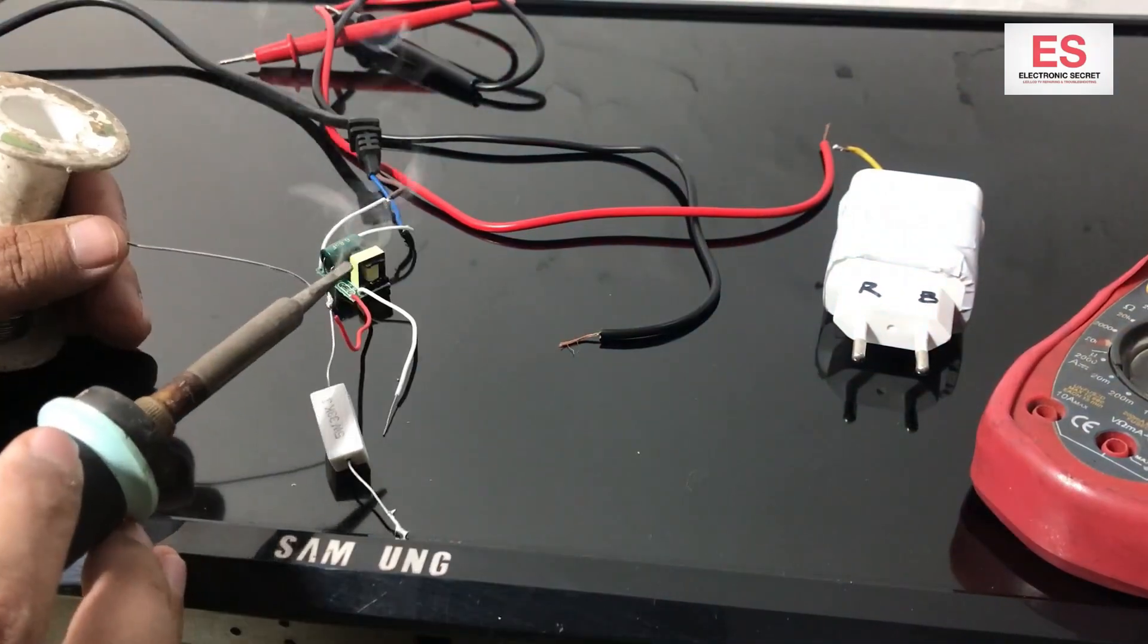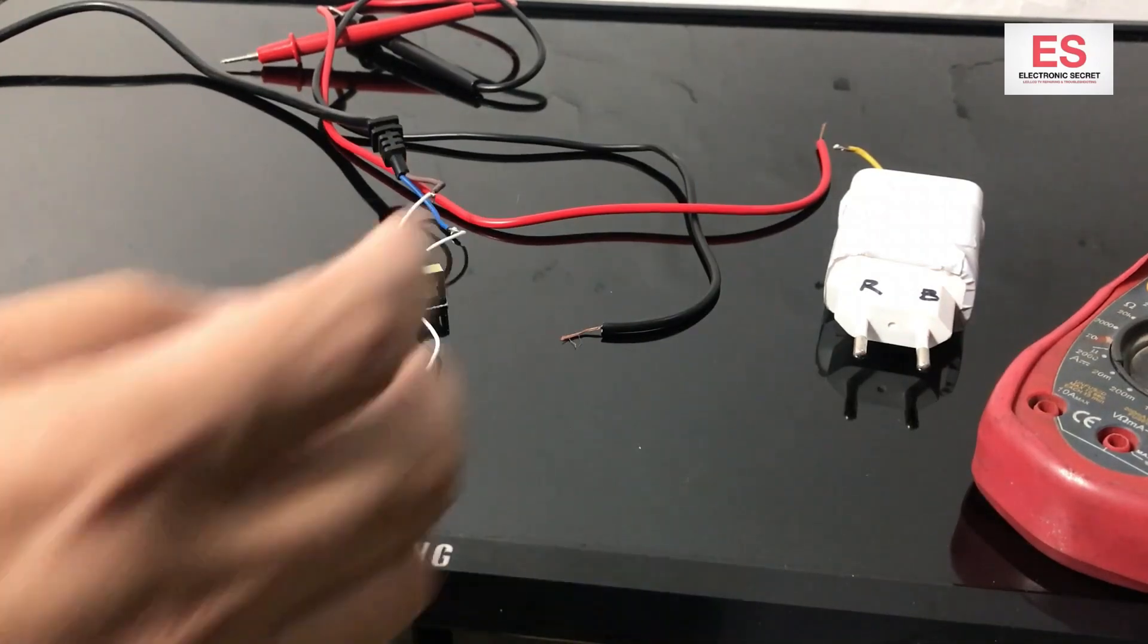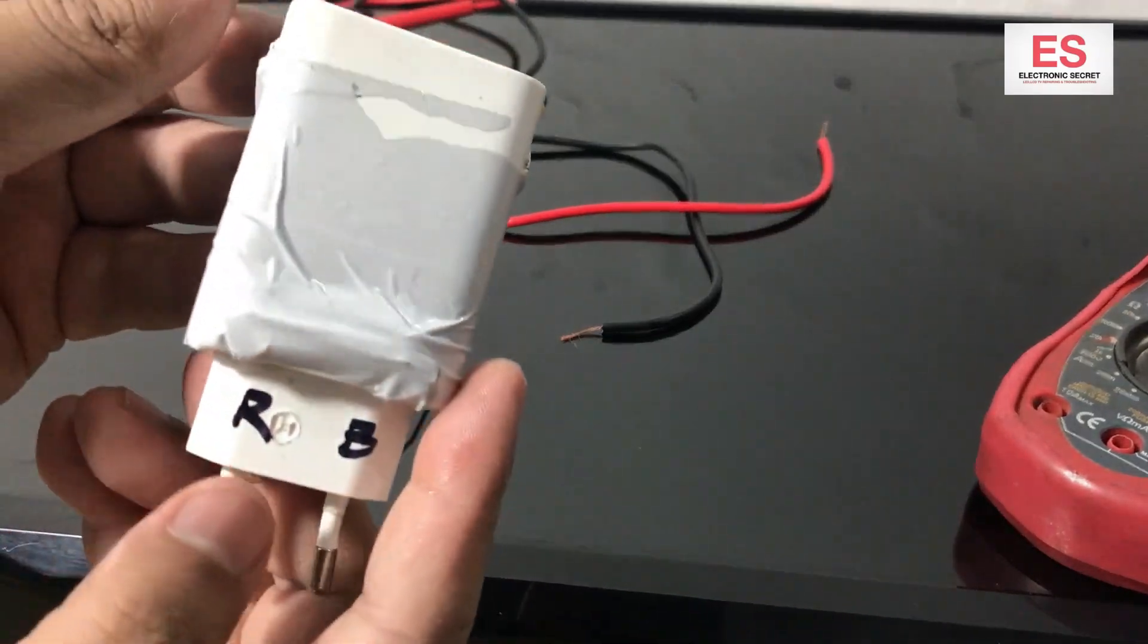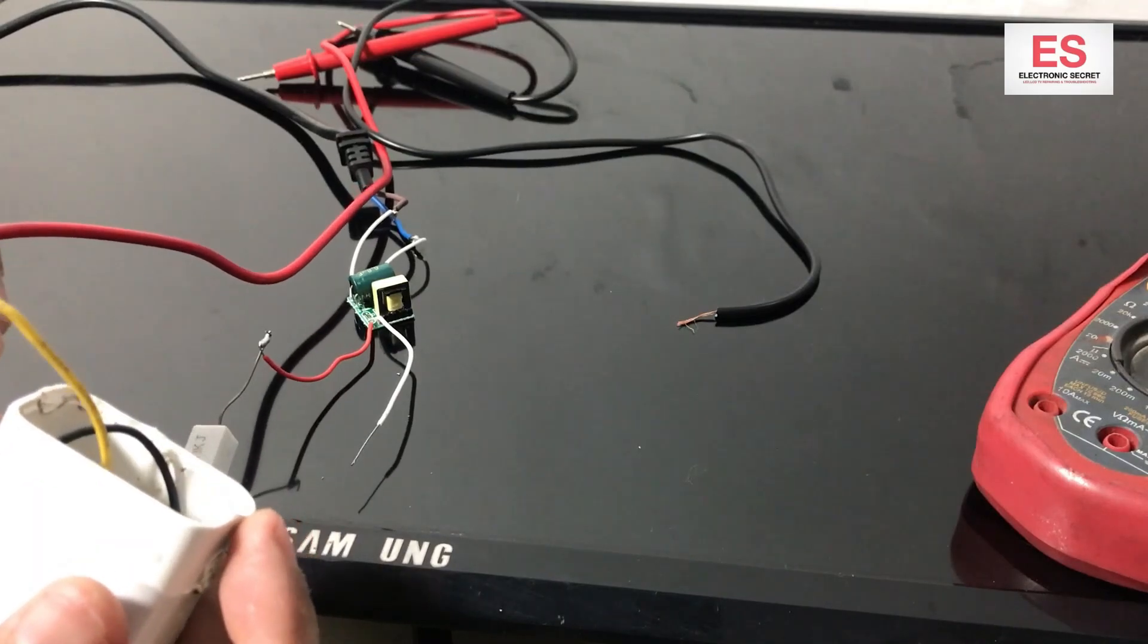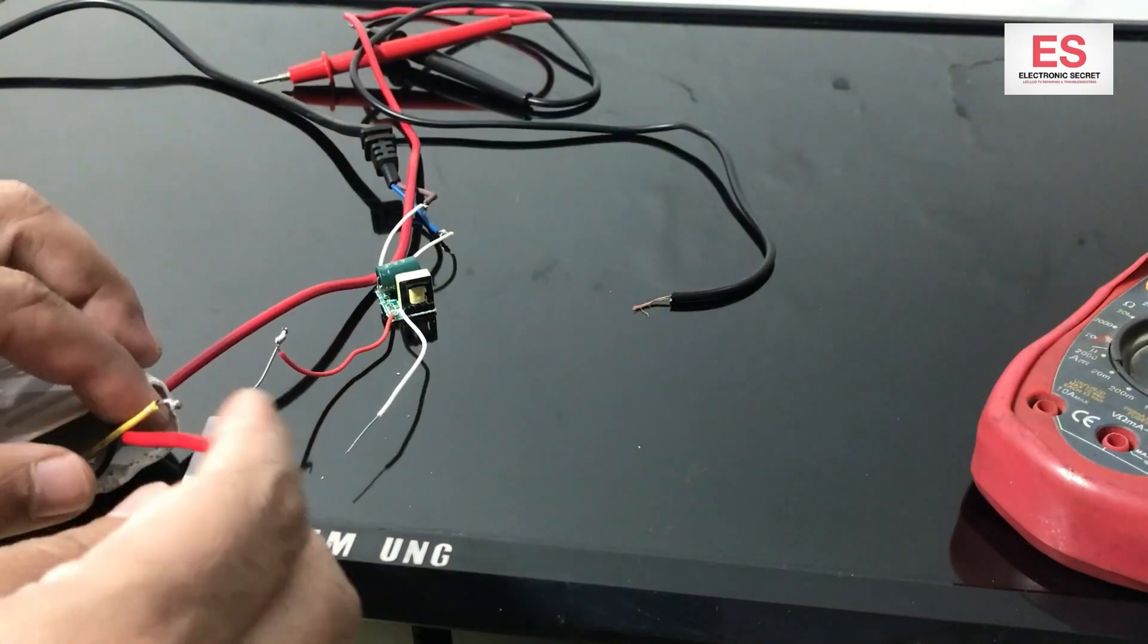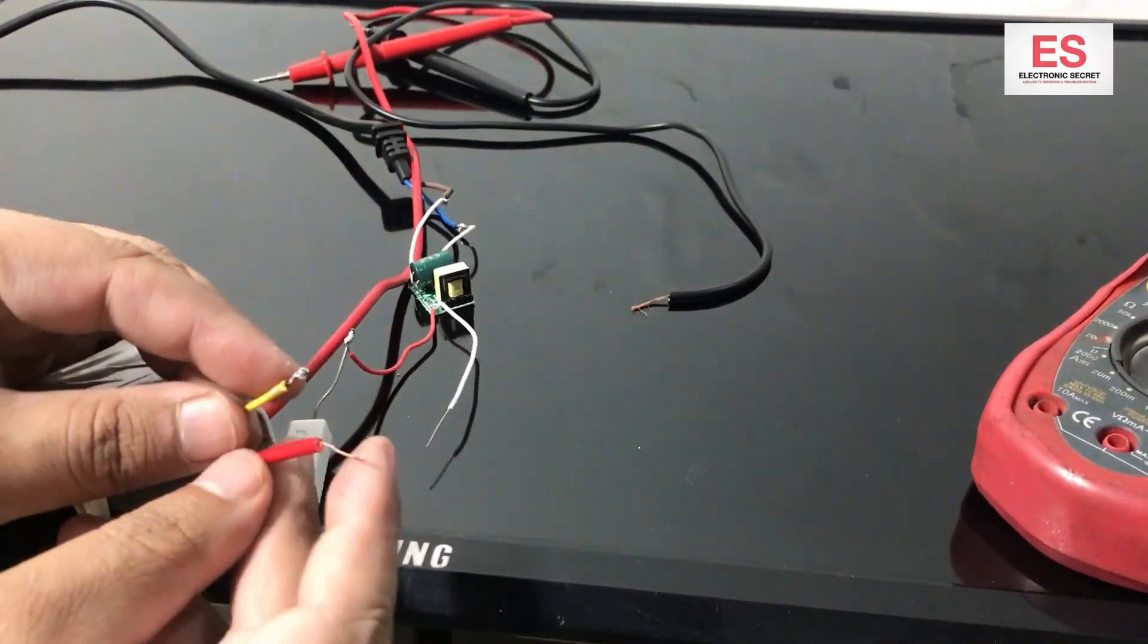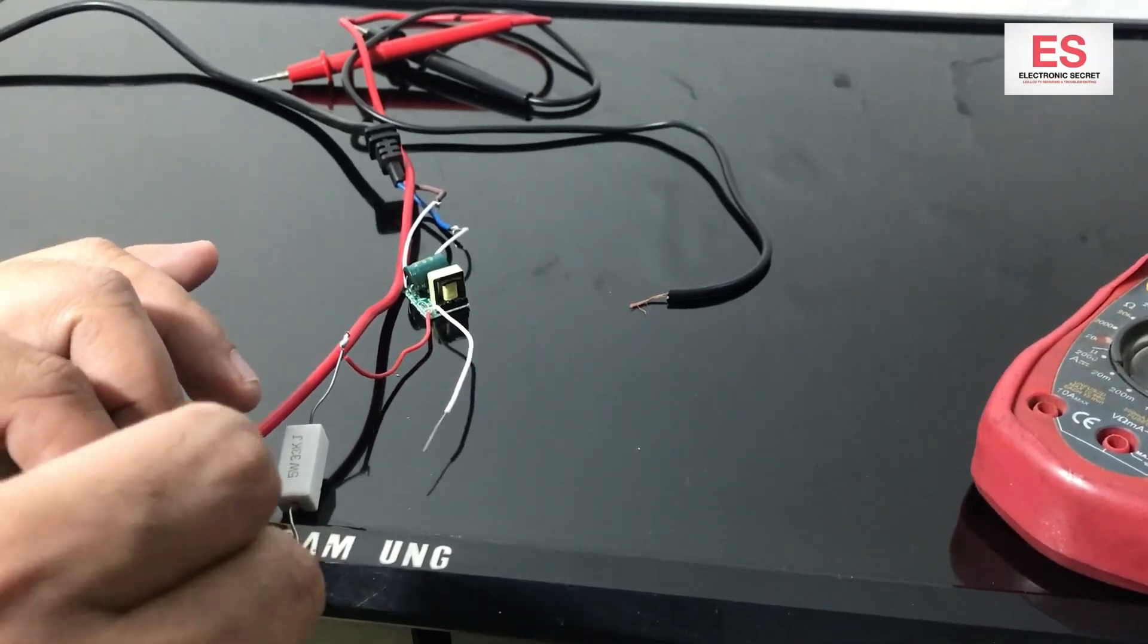Solder here. After this, 5 watt 33 kilo ohms resistor. You will solder the red wire with the red probe because it is a positive side. Now take this yellow wire and red probe and the resistor and solder them. Make a hole into the casing and pass the red probe wire from there so it will not mess up in future.